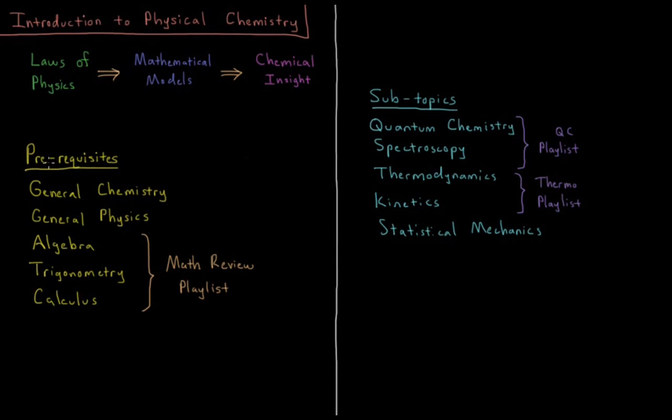Typically, it's taken for two to three semesters by university chemistry students. Typically they've already taken two semesters of general chemistry, two semesters of general physics, and have some good familiarity with the concepts of Gen Chem and introductory physics.